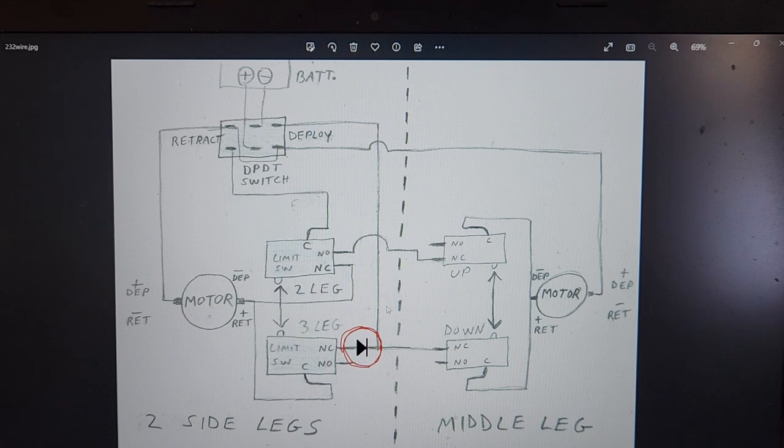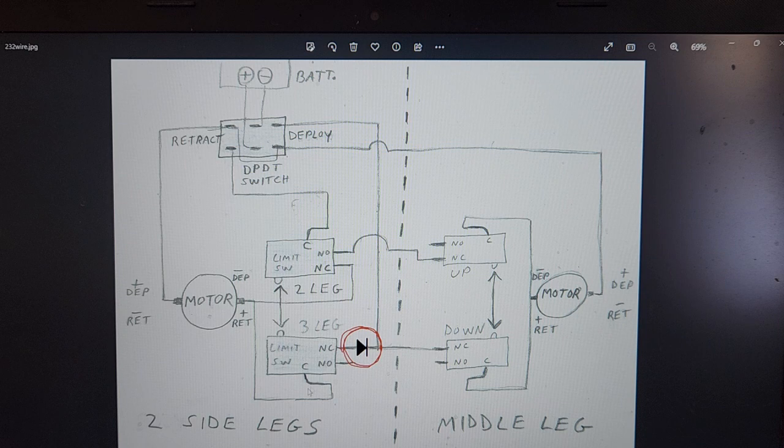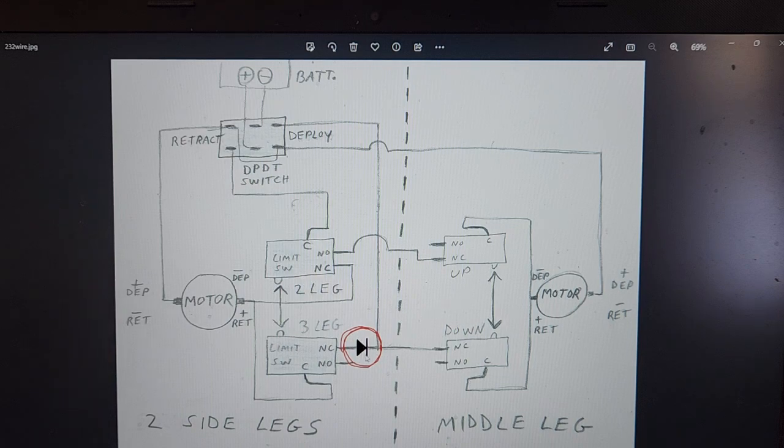On this design I threw a diode in here because the two side legs have to draw in and hit the limit switch before the middle foot retracts. And this was a method I implemented on my blue and white R2.